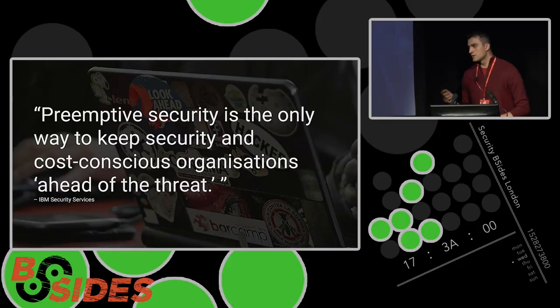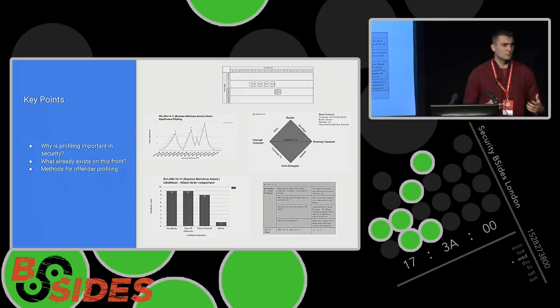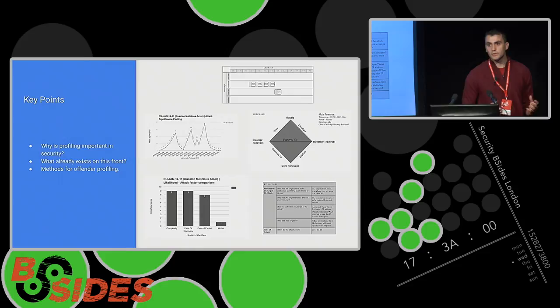I want to break today up into three main areas. I want to talk about what offender profiling is and why it's important. I want to talk about what already exists — some white papers and research papers that use offender profiling. And finally, I want to talk about where else we can use offender profiling, how we can use it in security operations, and some practical methods for doing that.